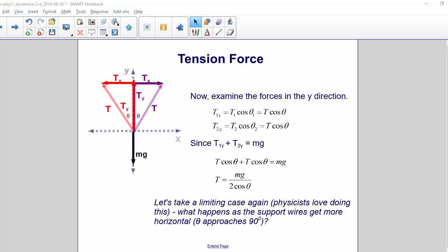And since T1y plus T2y equals Mg, T cos theta plus T cos theta equals Mg. So that is 2T cos theta equals Mg.